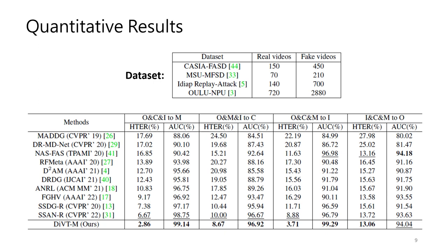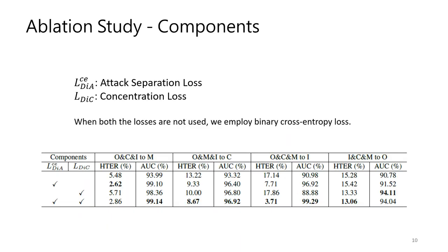The bottom table shows the results of our approach and previous competitive methods. Compared to the previous state-of-the-art domain generalized FAS methods, our proposed DIVT achieves better performance on almost all evaluation sets. The improvement of HTER in our work is particularly significant. We also investigate the effectiveness of the two core components in our method. When both losses are not used, we employ binary cross-entropy loss. The results reveal that both components are effective for improving the vision transformer on domain-generalized FAS tasks.